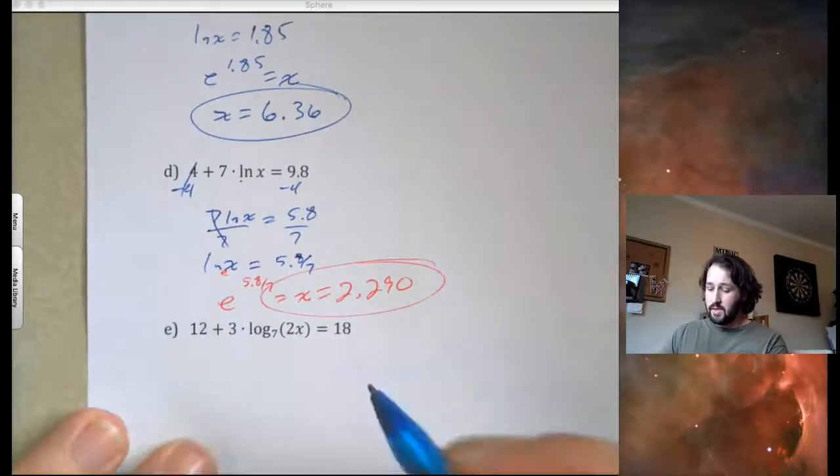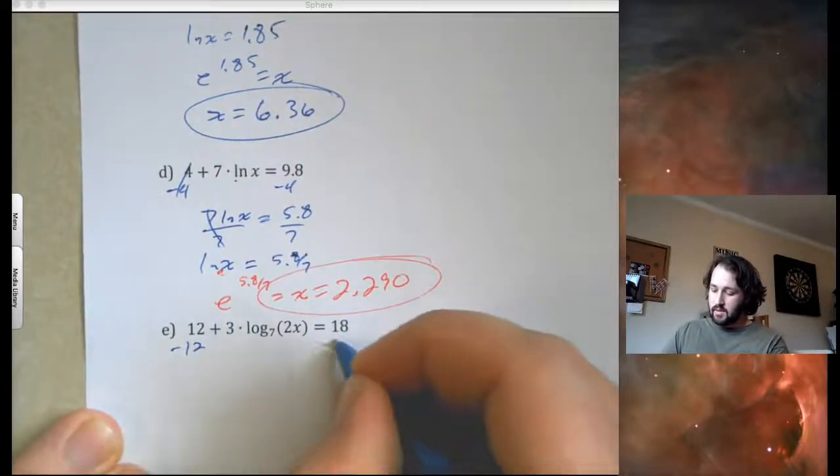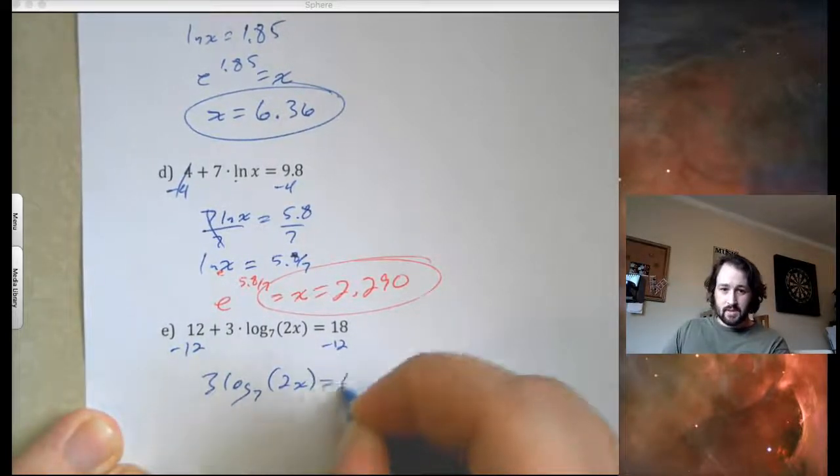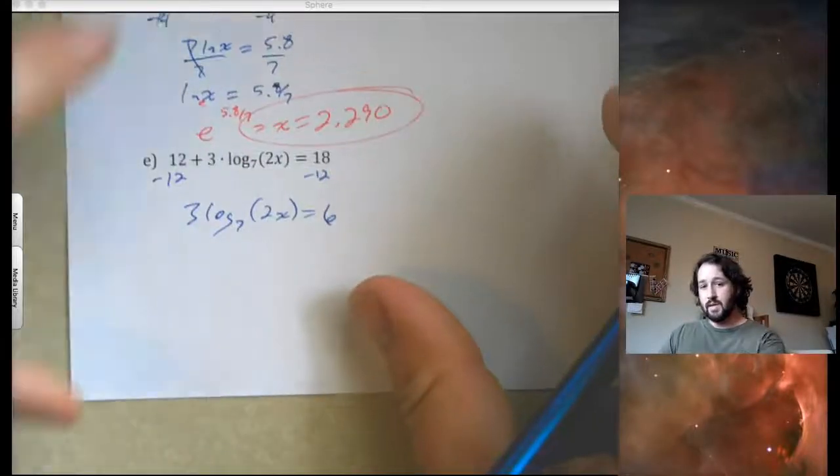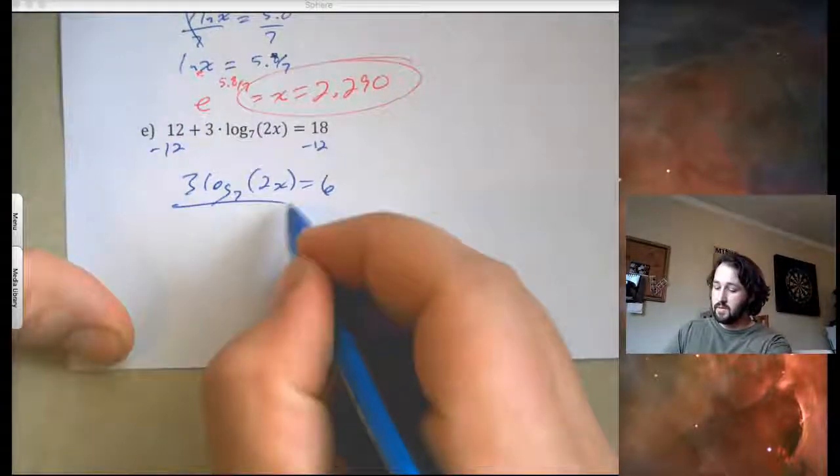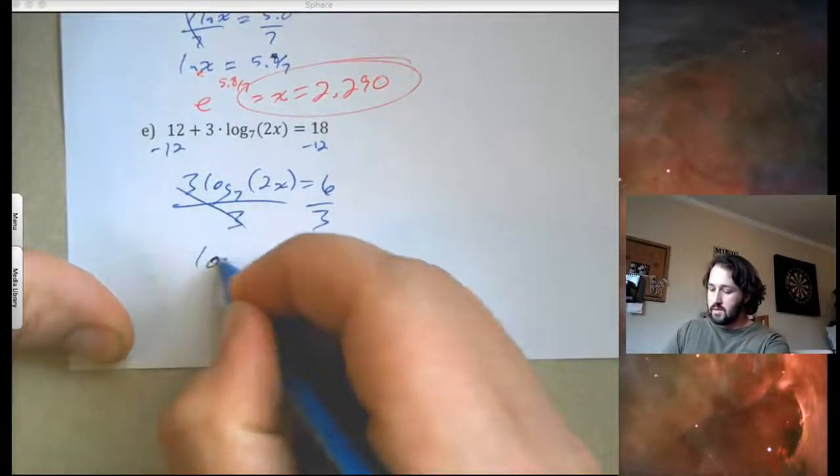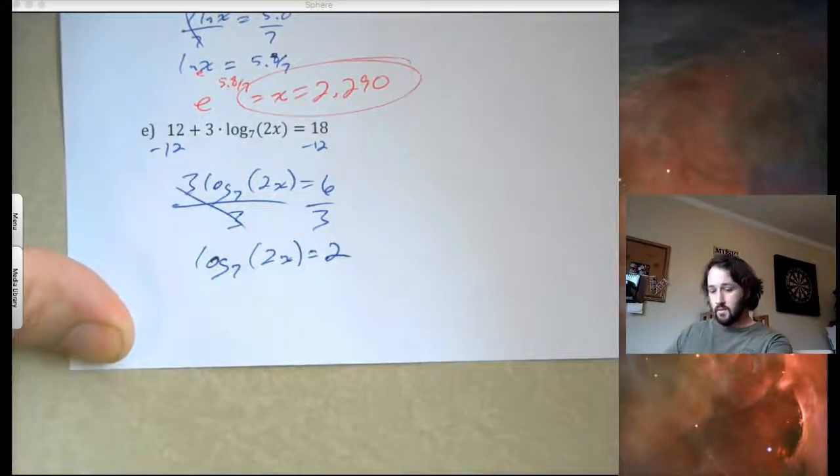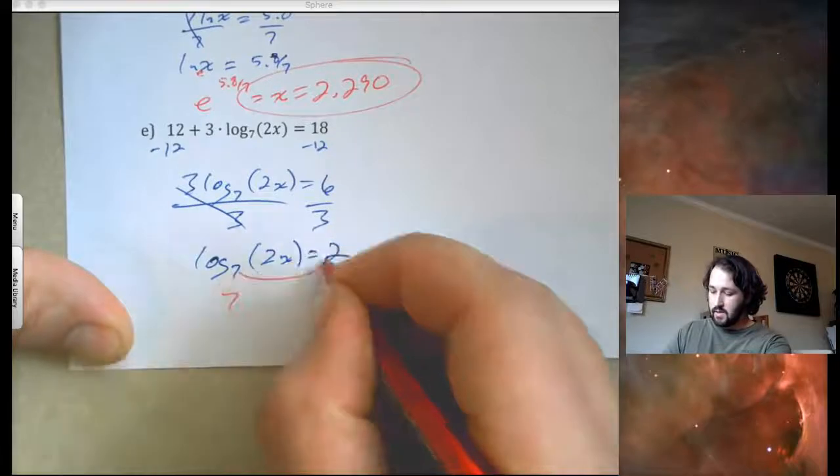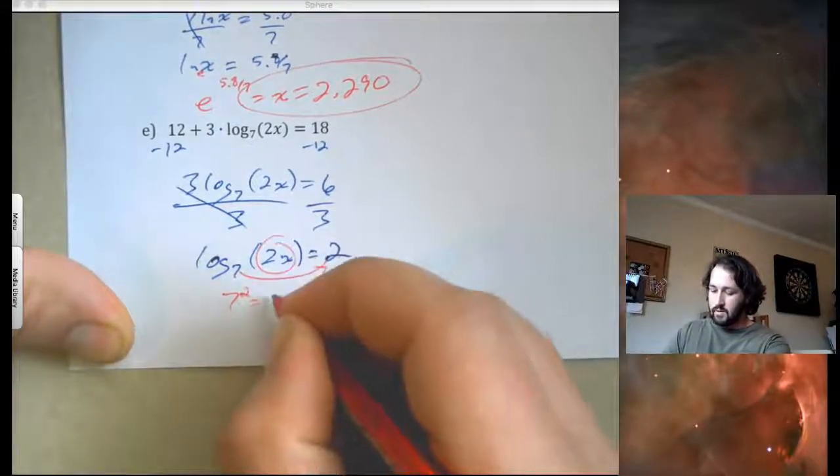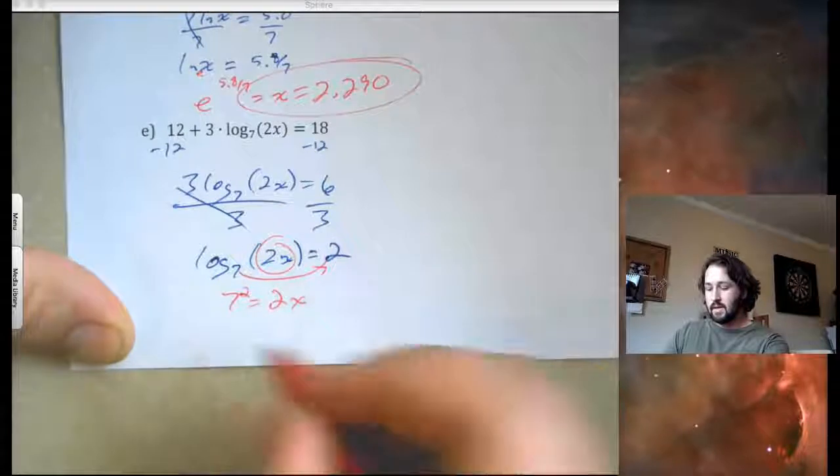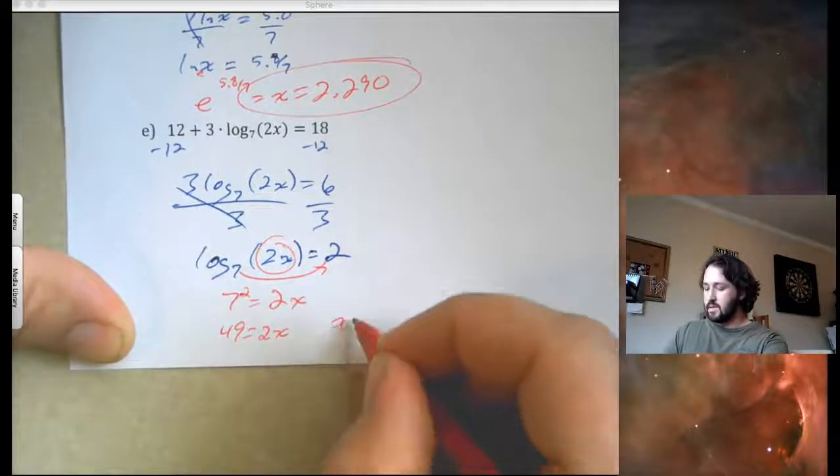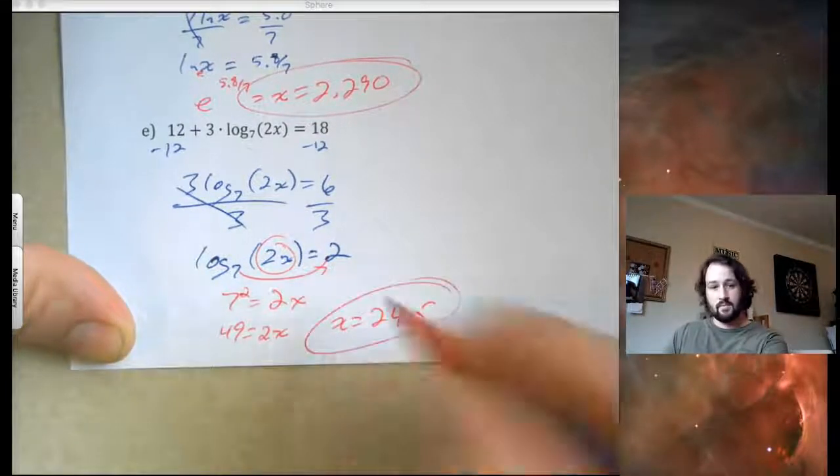Here, we have 12 plus 3. So, I'll subtract the 12. So, then I have 3 log of base 7 of 2x equals 6. Then that 3 is on the outside multiplying still. So, I'm going to divide both sides by 3. So, log of base 7 of 2x equals 2. And then I'm stuck in log form. So, I'm going to rewrite this in exponential. So, 7 to the second equals everything I had on the inside. So, 2x, 7 squared is 49, equals 2x. 49 divided by 2, x equals 24.5. That's it.